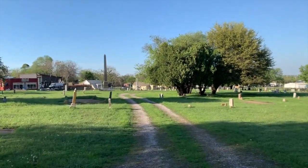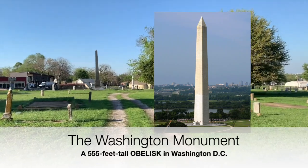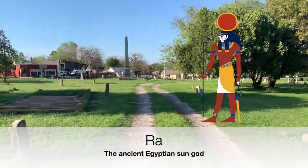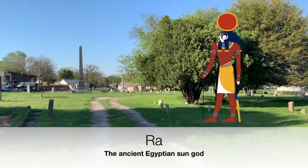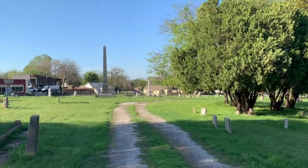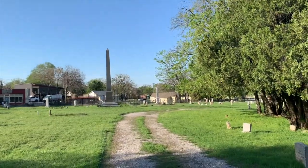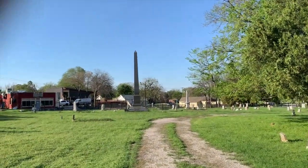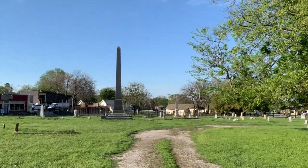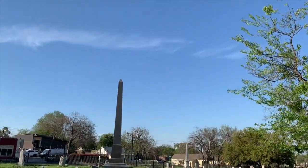An obelisk is an ancient Egyptian symbol that was adapted by Christians — our founding fathers, in fact. To the ancient Egyptians, it represented the worship of the sun god Ra. The top of the obelisk represents a ray of sunlight coming in, and in a traditional obelisk they would actually plate that top part with gold.